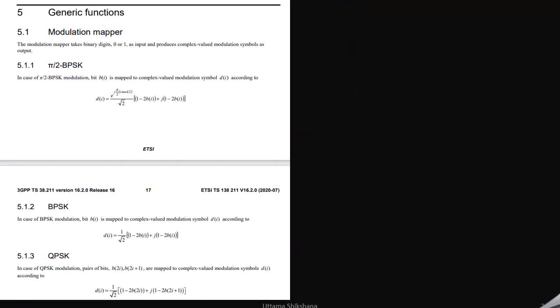In 3GPP spec 38.211 corresponding to 5G version 16.2, the equations for π/2 BPSK, BPSK, and QPSK are given. If you see between π/2 BPSK and BPSK, an extra exponential factor is used to do the phase shift by π/2.